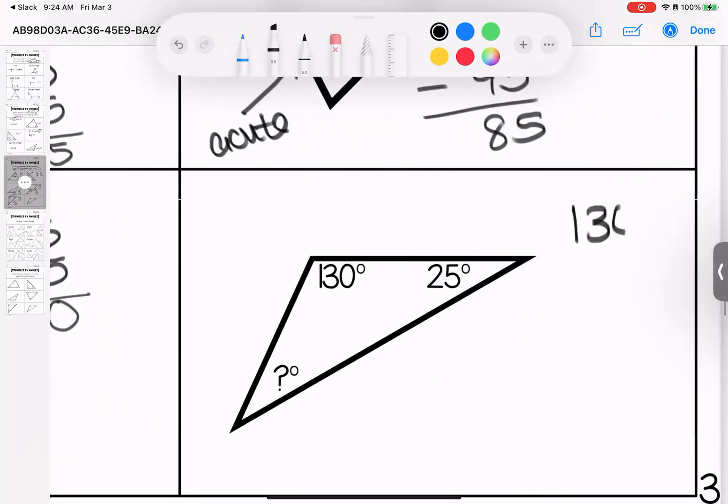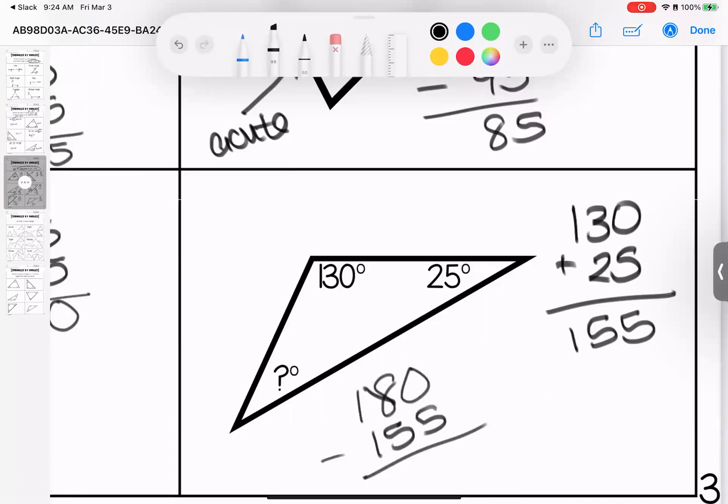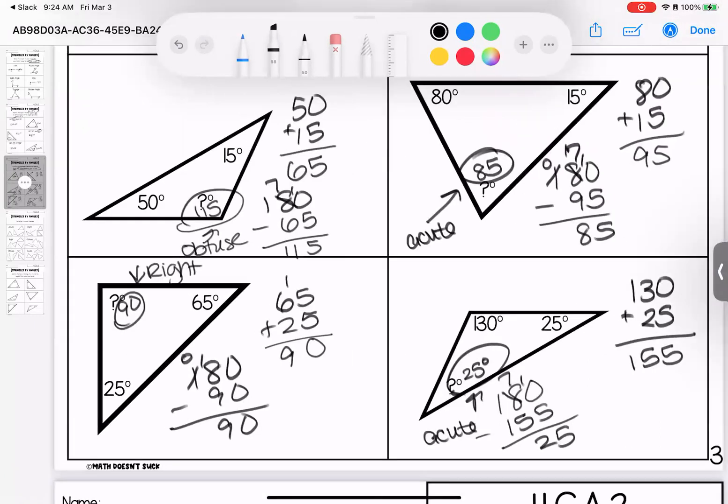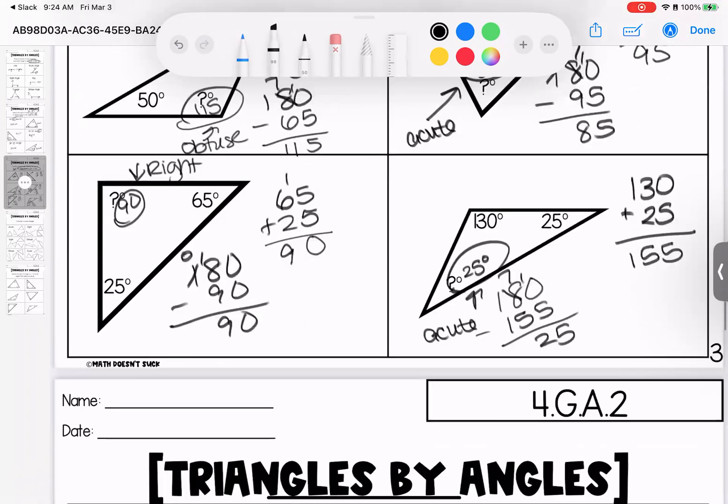Last one on this page. I have 130 and 25, which means in total, I have 155. Sorry about that, kiddos. I need 180, which means my leftover angle is 25 degrees. This angle is acute. Any questions on these? Bring them with you to class.